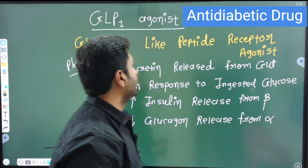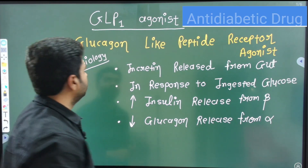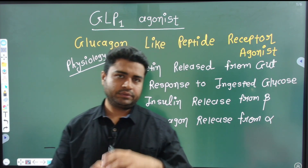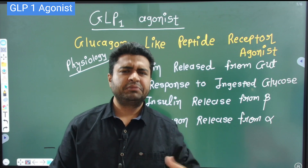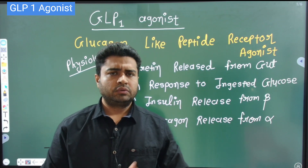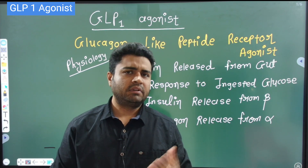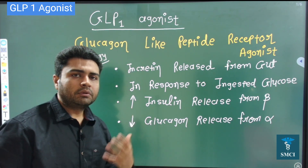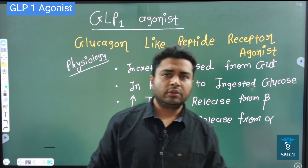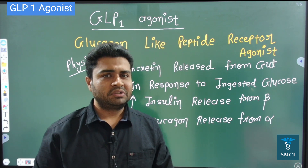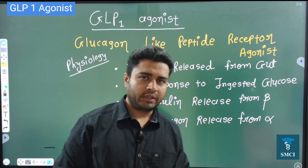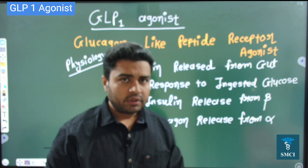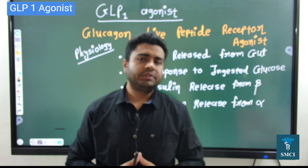In this video we are going to discuss about the GLP-1 agonists. The full form is Glucagon-Like Peptide receptor agonist. As we all know, diabetes cases have been increasing day by day worldwide. The medicines which are available are even not able to control diabetes, and newer forms of drugs are available in the market nowadays. Their generic forms are still not available and they are very costly, but we need to understand these drugs.